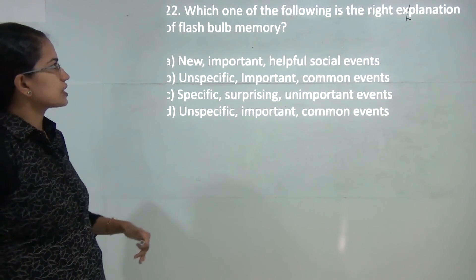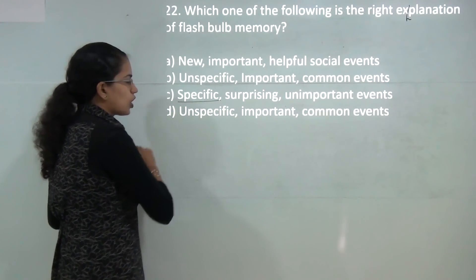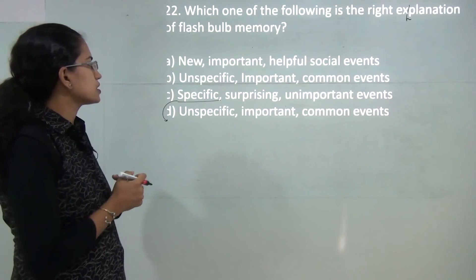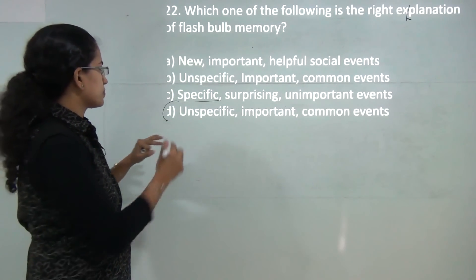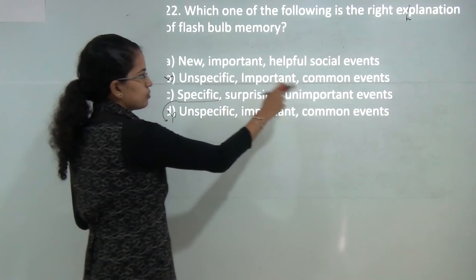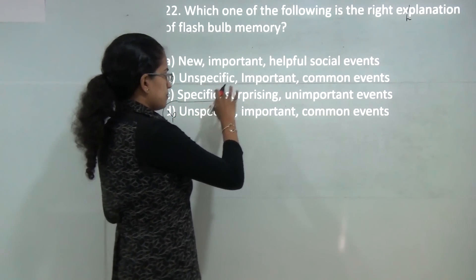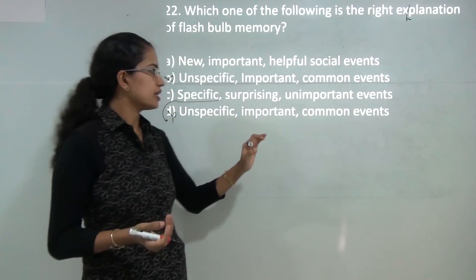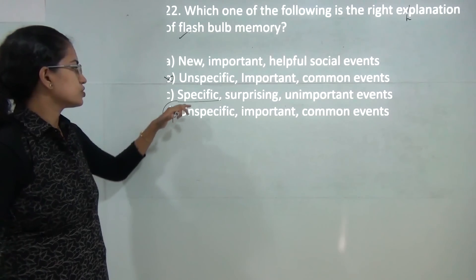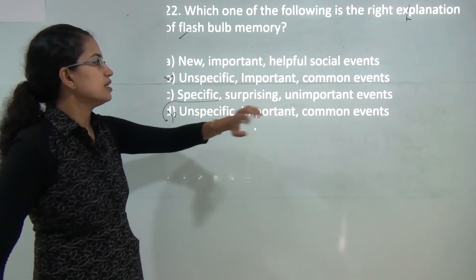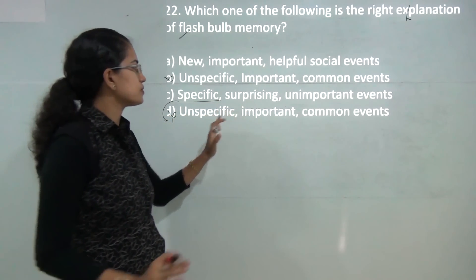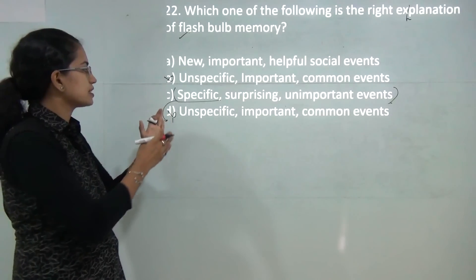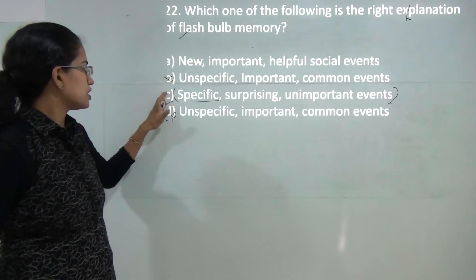Next: which of the following is right to explain flashbulb memory. Flashbulb memories are specific, not like semantic memories. They are kind of episodic memories, so they are much more specific. Since they are specific, unspecific would automatically be removed. However, there is some misprint because B and D are the same. They are specific, they are surprising, and they can be of unimportant events. For example, 9/11 tragedy can be important for Americans but not for Indians. However, it becomes a kind of flashbulb memory for most Americans. So you have the information that is specific, surprising, and unimportant events. Also, it is important to note that this is not the only criteria under which you will have flashbulb memory formation. However, you should read this question in such a manner that this is one of the criteria that would lead to flashbulb memory. So C would be the correct option.